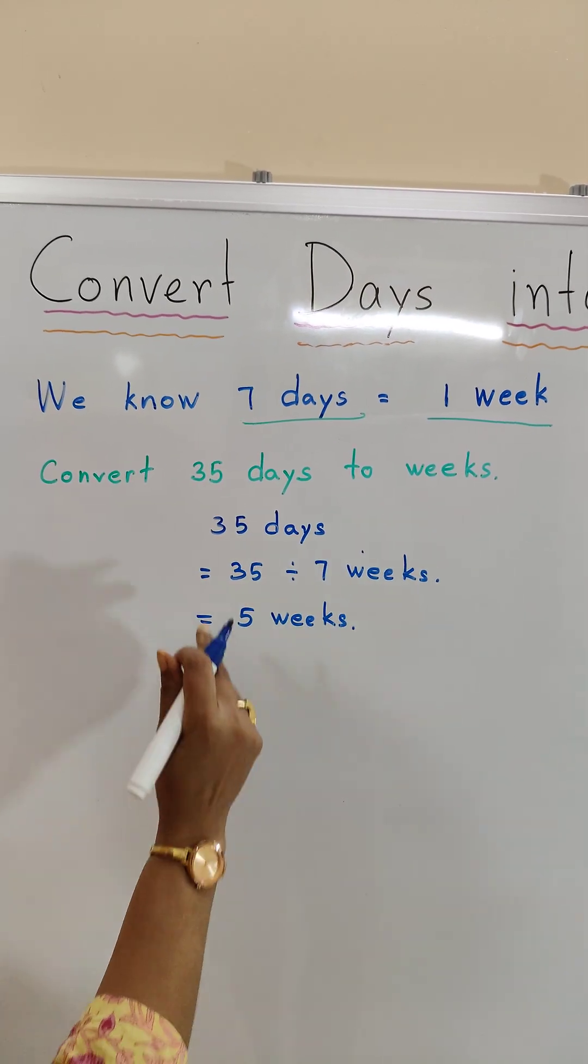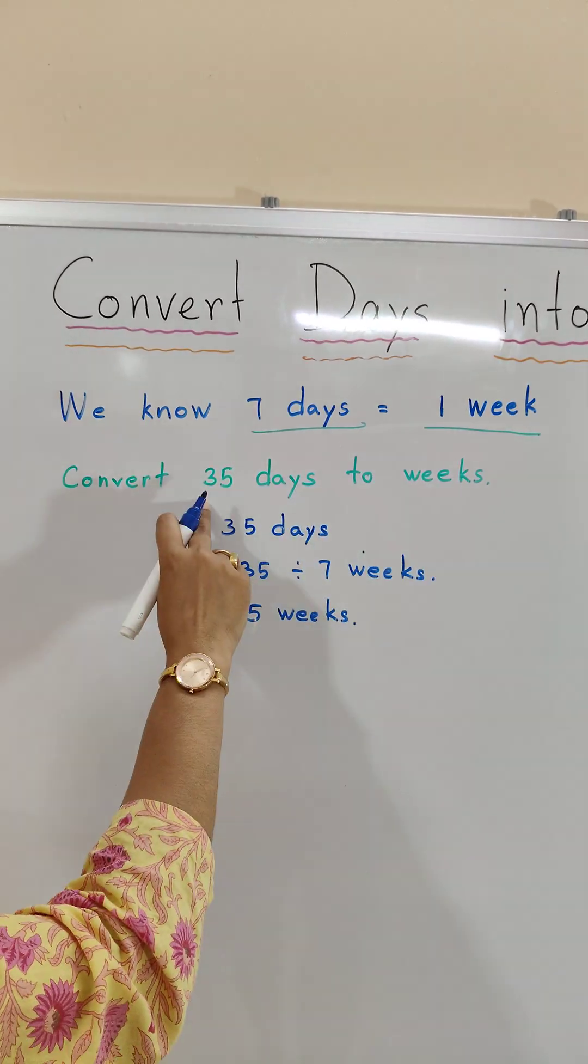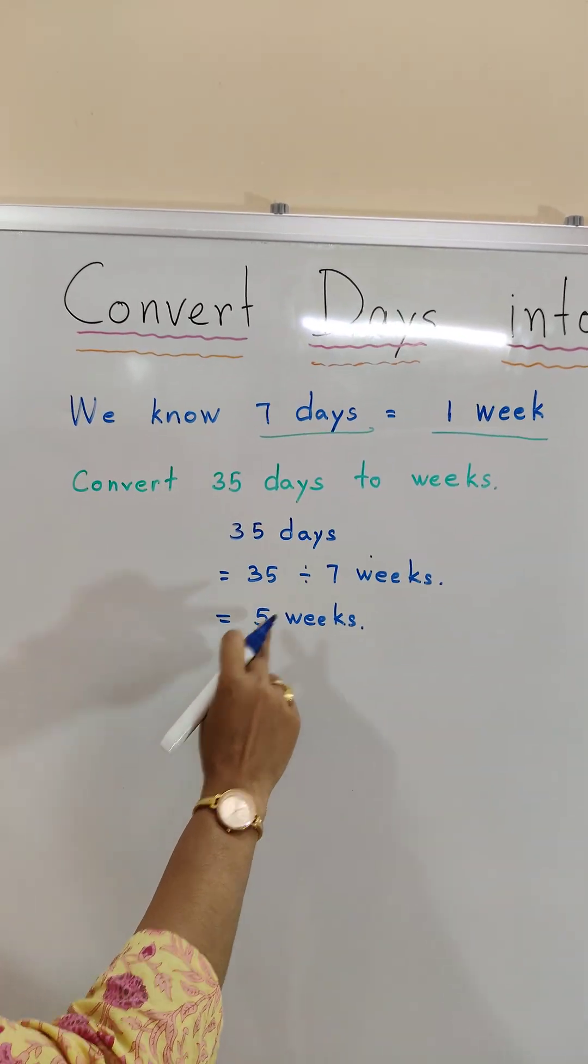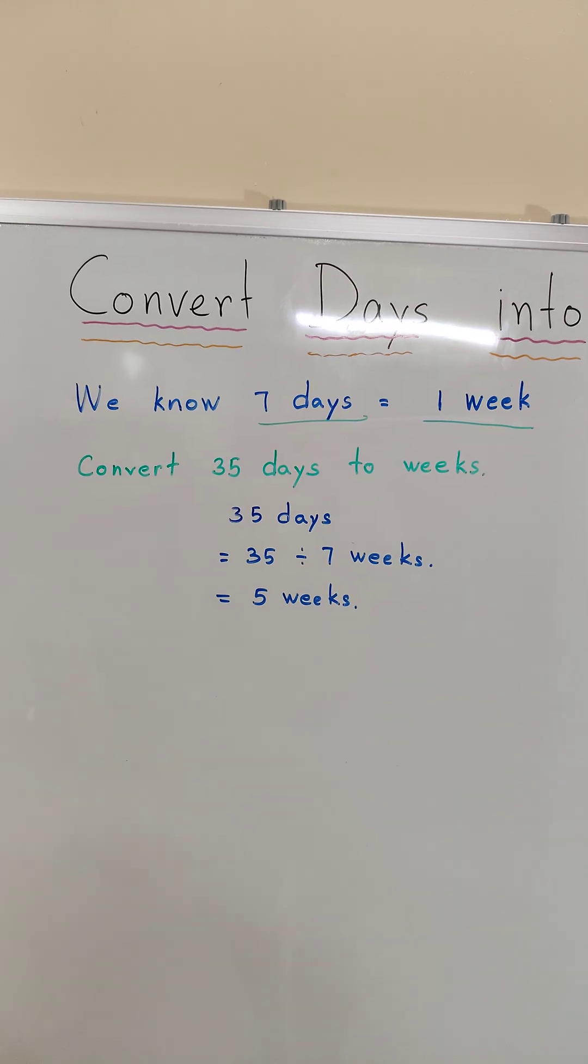So now we know how to convert days to weeks. 35 days is equal to 5 weeks. Now let's do another example.